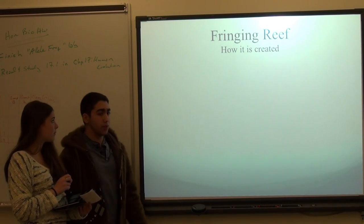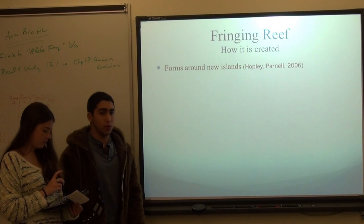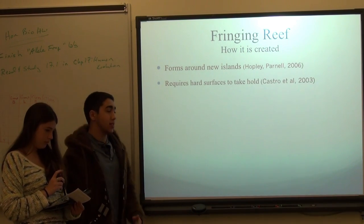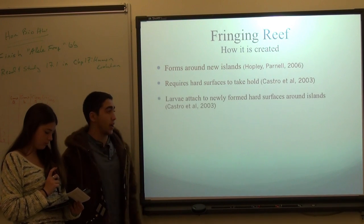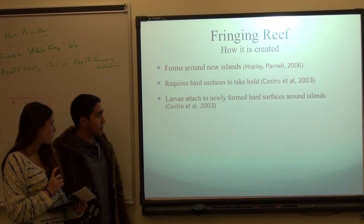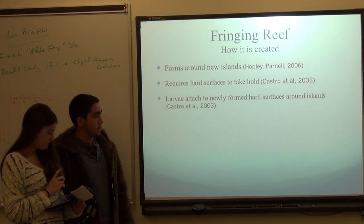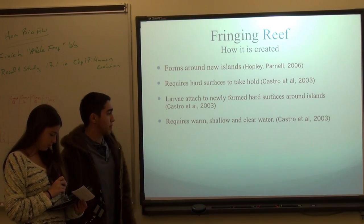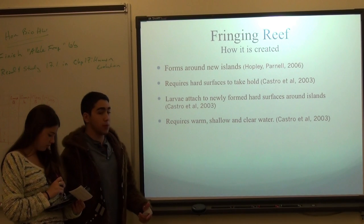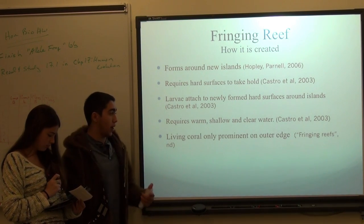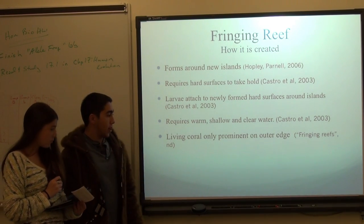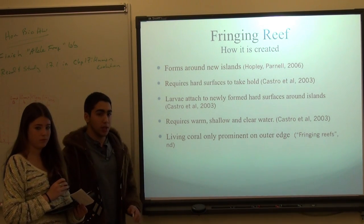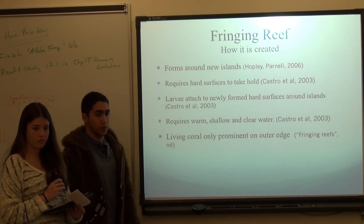The fringing reef can only form around new islands and it forms when larvae attach to hard surfaces. It needs a hard surface to grow — it can't grow on soft land. Three conditions it requires are warm, shallow, and clear water. When it comes to the fringing reef, living coral are only prominent on the outer edge, near the reef crest and the reef slope.